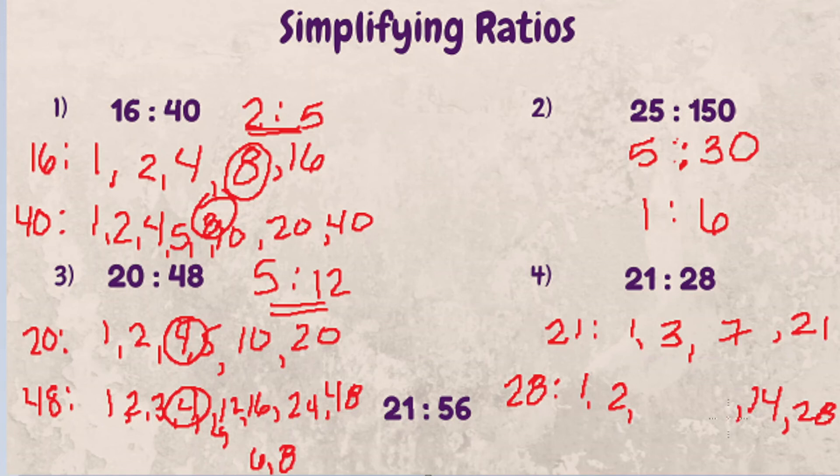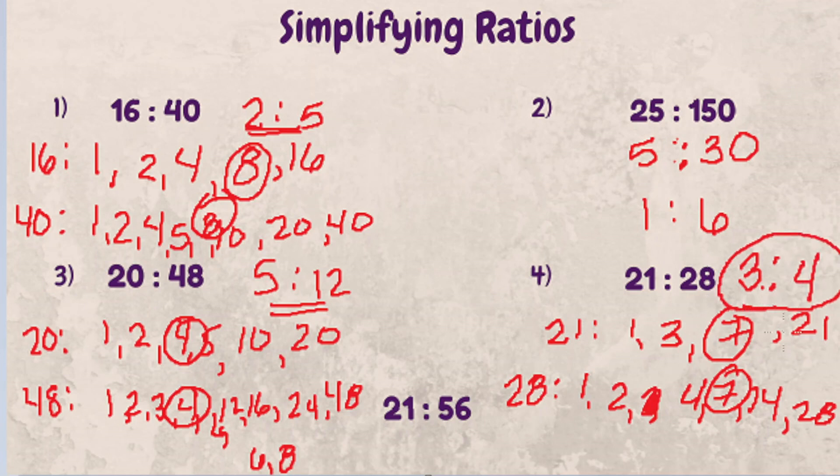So if we look at these numbers, we can see that 7 is the greatest common factor. Let's divide 21 by 7 and we get 3. 28 divided by 7 and we get 4. 3 to 4 is our reduced ratio.